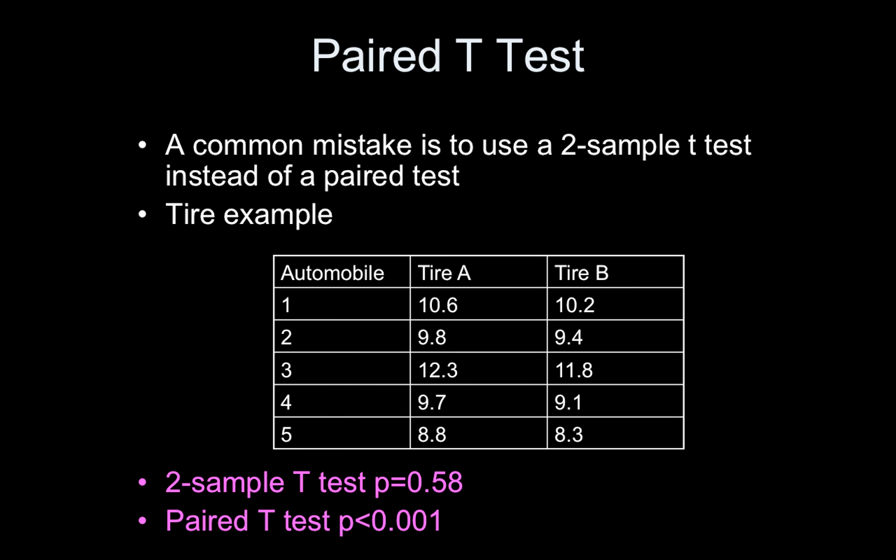This is an interesting example. The reason I use it is because if you use a two-sample t-test to test this difference, you'll get a p-value of 0.58, whereas the proper test, the paired t-test, will give you a p-value less than 0.001. This is one of the few cases where doing the right thing will actually improve your p-value. A lot of times, I find when I'm correcting people's errors that I make their p-values worse, but it doesn't matter, because we're all just trying to do the right thing. But here's the case where the right thing is going to help you.